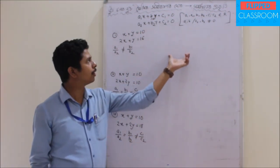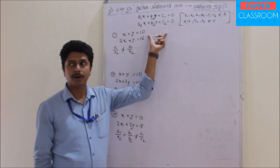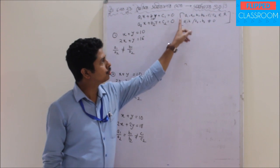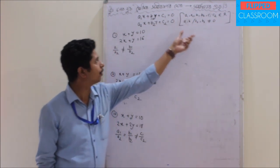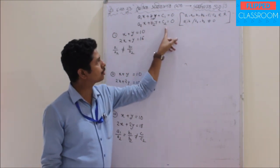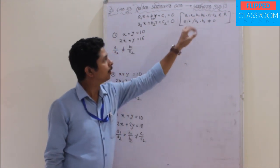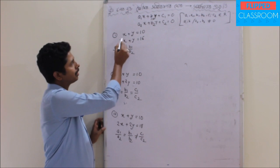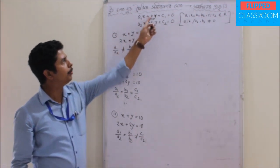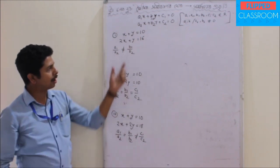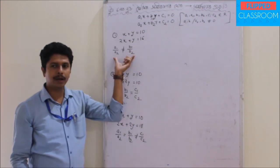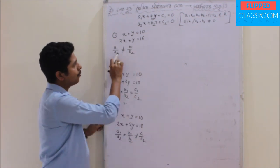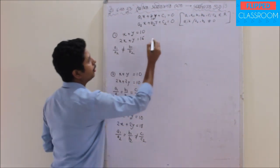Here we are going to compare the general equation. The general form is a1x plus b1y plus c1 equal to 0 — where a1, b1, c1 belong to our set. On the other hand, we have a2x plus b2y plus c2 equal to 0, where a2, b2, c2 are also given.